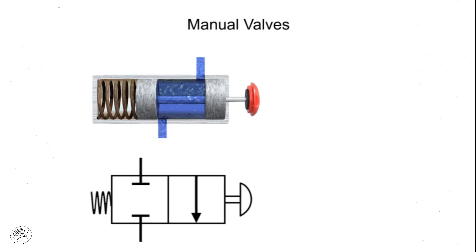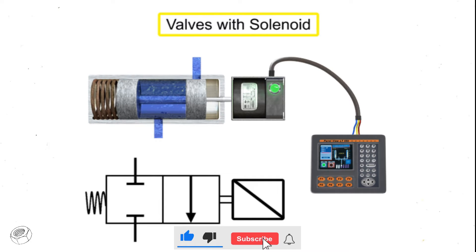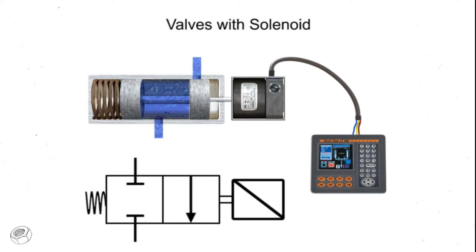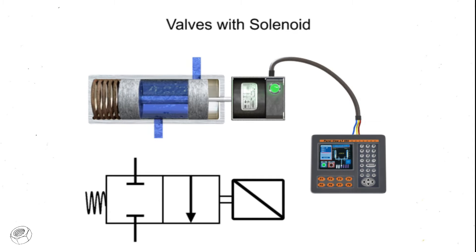By contrast, valves with a solenoid actuator respond to an electrical signal for shifting. With electrical control, machine cycles can be set up for automatic sequencing, and operator control can be exercised from a remote location.